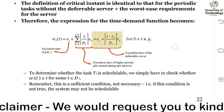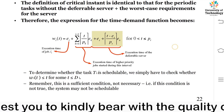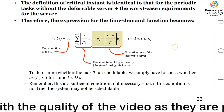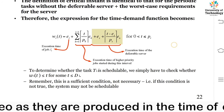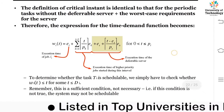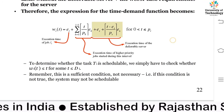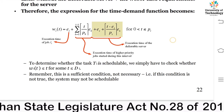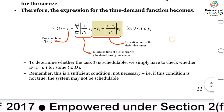We also add the execution time of the deferrable server, which is given by e_s + ceil((t − e_s) / p_s) · e_s. This is the execution time contribution of the deferrable server in the time demand function expression.